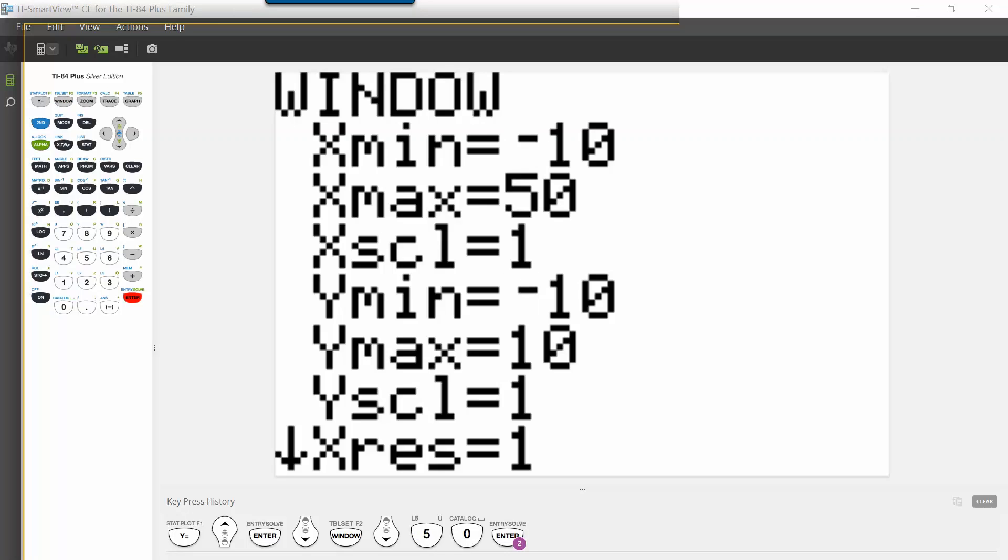Our y values represent the percent of adults that smoked. Our smallest value is 19.7 and our largest was 42.4, so a good window might be from 15 to 45.